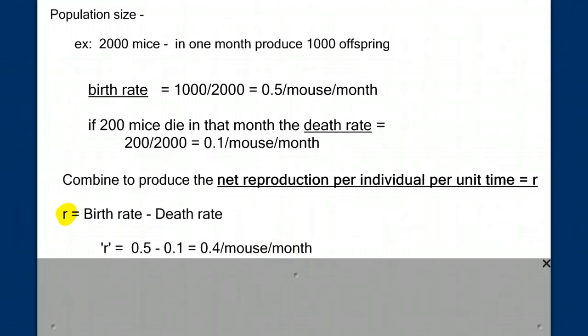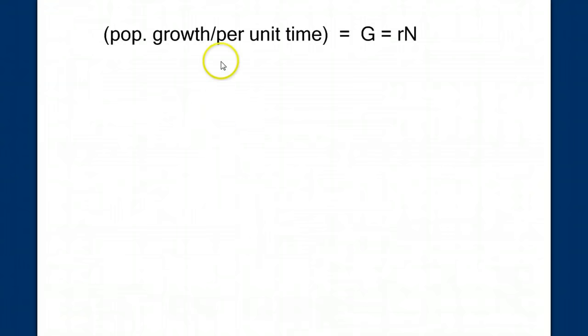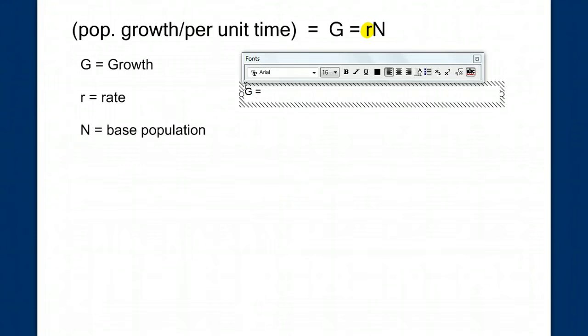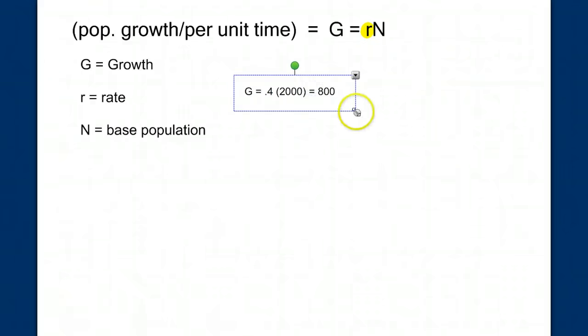But let's see what this means as we grow from one month to the next. So this is the formula we're going to use. The population growth per unit time, or the growth G, is going to equal R, which is our intrinsic rate of growth, which we just calculated, times N. And N is our base population. So for us, we're going to have G, in our example, equals R, which is 0.4, times the population, which was 2,000. So that in one month's time, we'd have a growth rate, or we'd add 800 individuals to our population. So what's our population at now? We take this 800 we added, net rate of growth, or net growth of individuals. We add it to our base population of 2,000. So our population at one month, or our N1, equals 2,800.